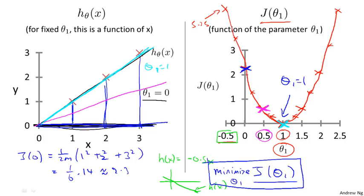So to wrap up, in this video we looked at some plots to understand the cost function. To do so, we simplified the algorithm so that it had only one parameter theta one and set theta zero to zero. In the next video, we'll go back to the original problem formulation and look at some visualizations involving both theta zero and theta one, which will give an even better sense of what the cost function J is doing in the original linear regression formulation.